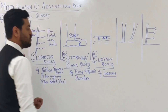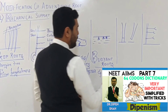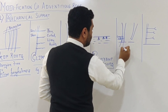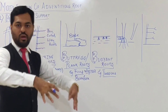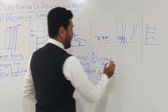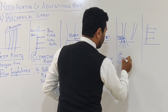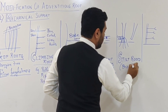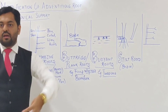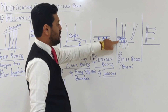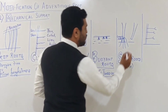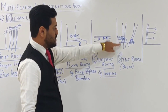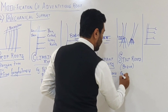The next type of modification is where, from the lower nodes of the stem, many roots arise and grow around and into the soil for mechanical support. These appear as stilt roots, also called brace roots — 'brace' meaning to embrace, so the roots embrace the soil. These stilt or brace roots can arise from the lower node of the stem or from the base of the stem. Examples of plants with stilt roots from lower nodes are jowar, maize, sugarcane, and wheat.